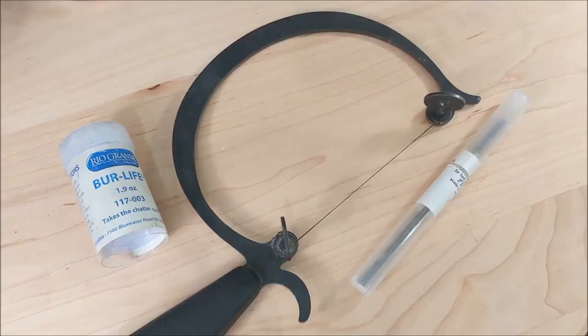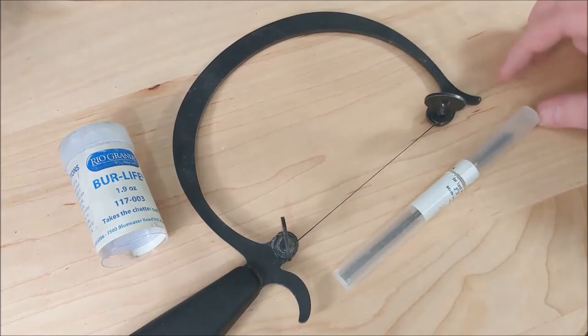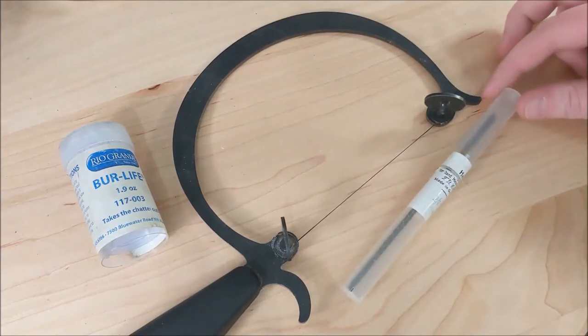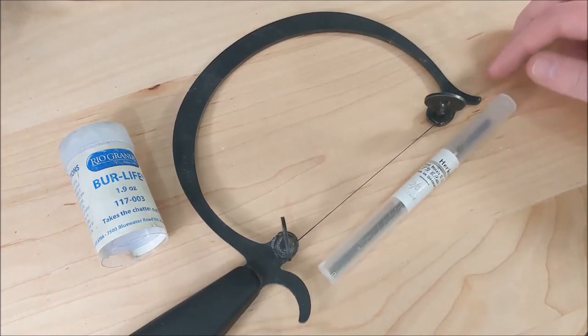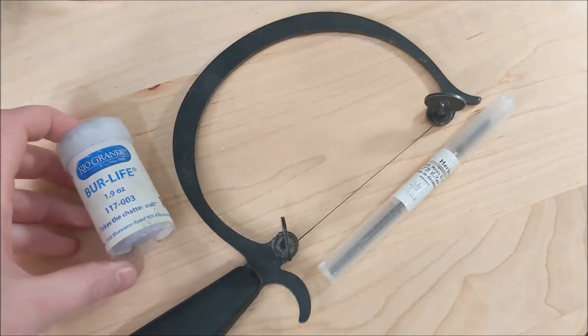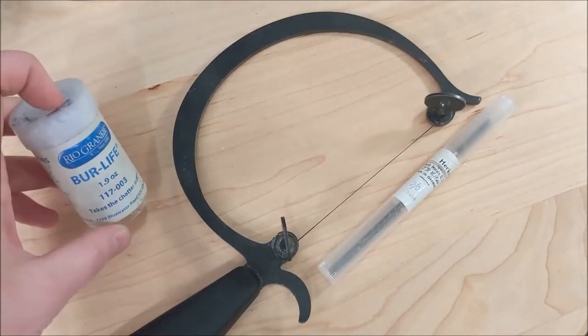So here we have more materials that you'll need to help make your pendant. A simple jeweler saw, some blades. I recommend using Tua if you're going to be cutting 20 gauge, and then Burlife if you need some help lubricating your blades while you're cutting.